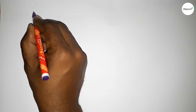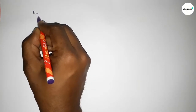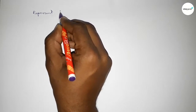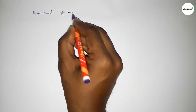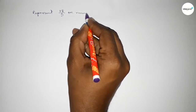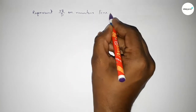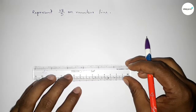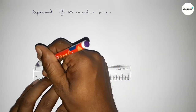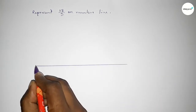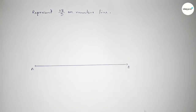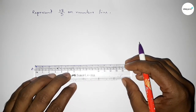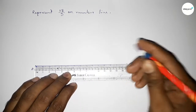Hi everyone, welcome to SI Share Classes. Today in this video we have to represent 18 over 5 on a number line. So let's start the video. First of all, we have to draw here the number line, so first drawing here a line and taking arrow marks on both sides. This is the AB line.